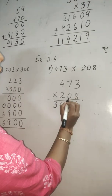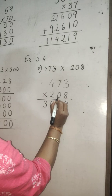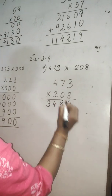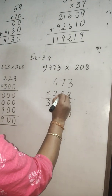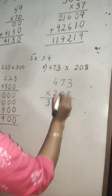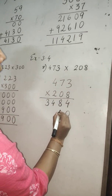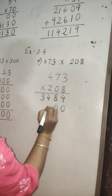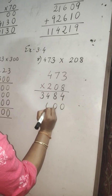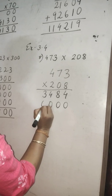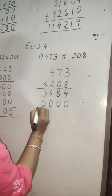Now to multiply with the 2nd digit, you have to leave the 1st place. 0 multiplied by anything is always 0. So 0 times 3 is 0, 0 times 7 is 0, 0 times 4 is 0.